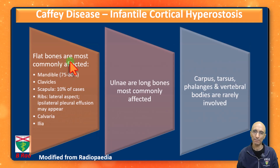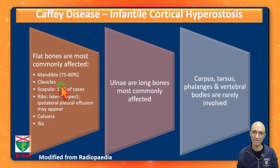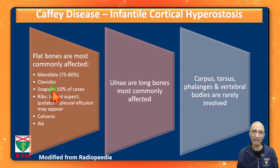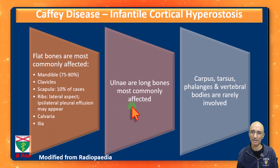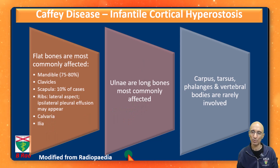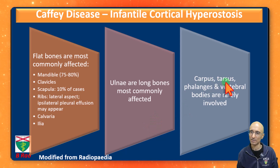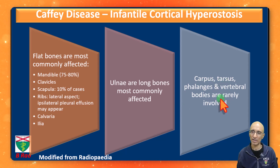Caffey's disease classically involves the flat bones. The mandible is commonly involved, as we saw in our child. Clavicles can also be involved. Rarely, scapula lesions can be seen. Lesions can also be seen in the ribs, calvaria, and iliac bones. When the long bones are involved, the ulna is the most common bone involved. Rarely, the corpus, tarsals, phalanges, and vertebral bodies can also be involved.